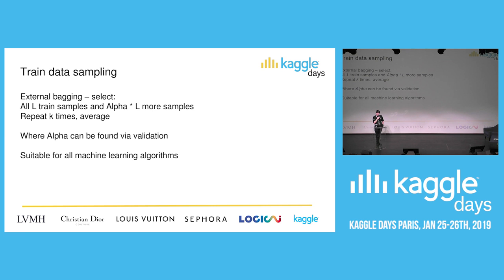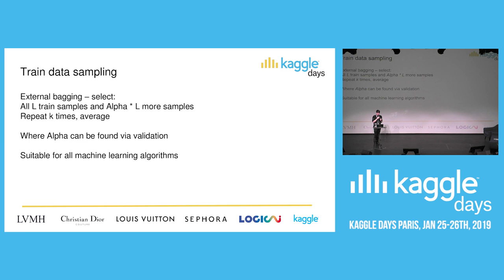Next is about data sampling — training data sampling. Everyone knows about bagging: you select a subset of training data and build a model several times. But it was very useful for me to do external bagging. Instead of selecting all training samples L, we add more samples — for example, twice L samples. We also build several models k times and average the predictions. This is suitable for all machine learning algorithms, not only tree-based.